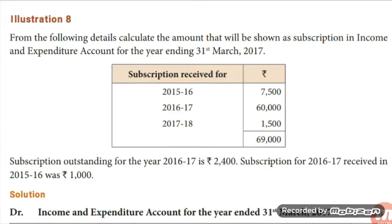Question: From the following details, calculate the amount that will be shown as subscription in the income and expenditure account for the year ending 31st March 2017. Subscription received: for 2015–16 = ₹7,500; for 2016–17 = ₹60,000; for 2017–18 = ₹1,500; total subscription received = ₹69,000. Subscription outstanding for 2016–17 = ₹2,400. Subscription for 2016–17 received in 2015–16 = ₹1,000. You are required to show the amount of subscription in the income and expenditure account.